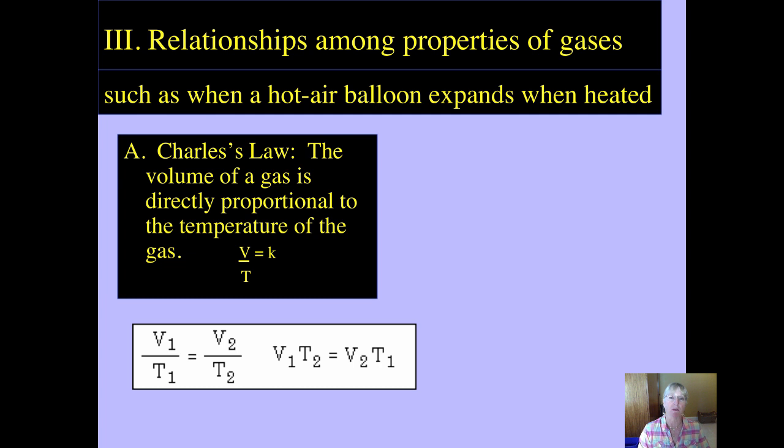V2 and T2 stand for what would the volume be if now we have a different temperature. And typically three out of the four values are given. You find the fourth one through simple eighth grade algebra. So that's a Charles law problem.